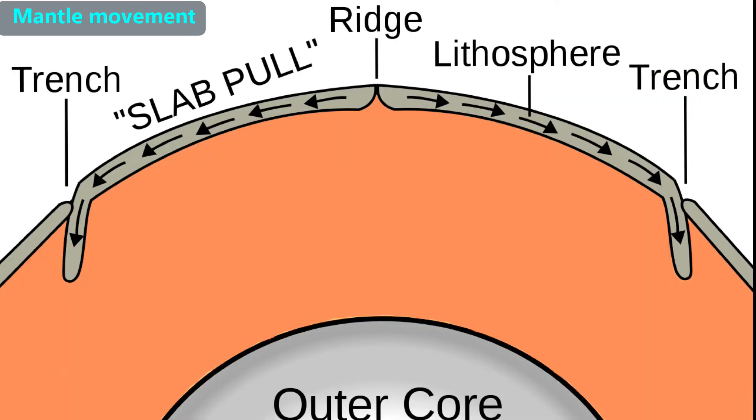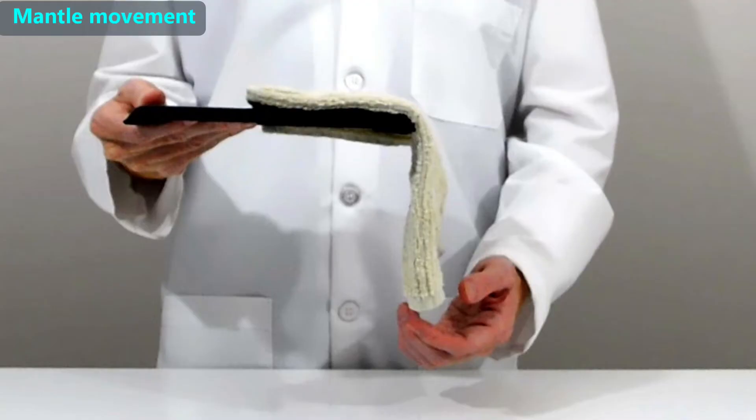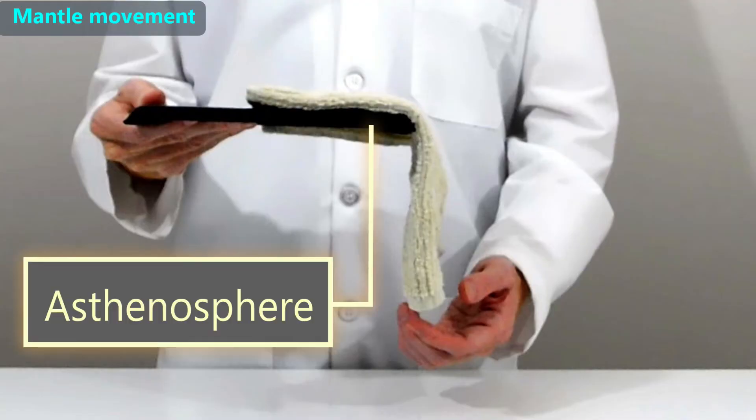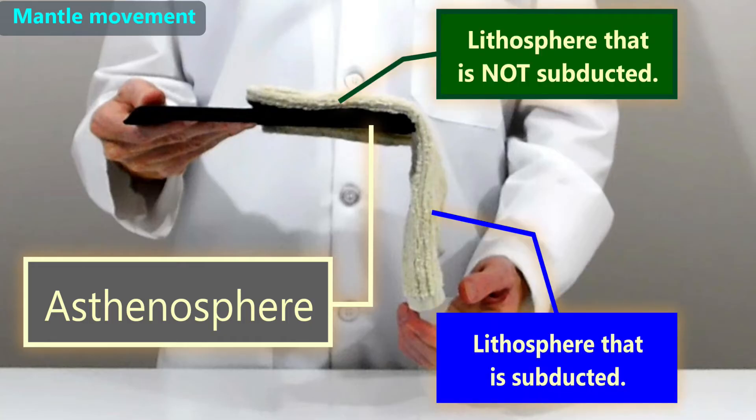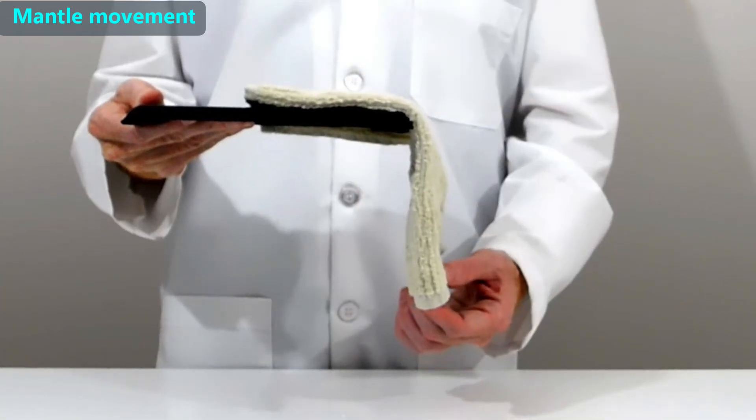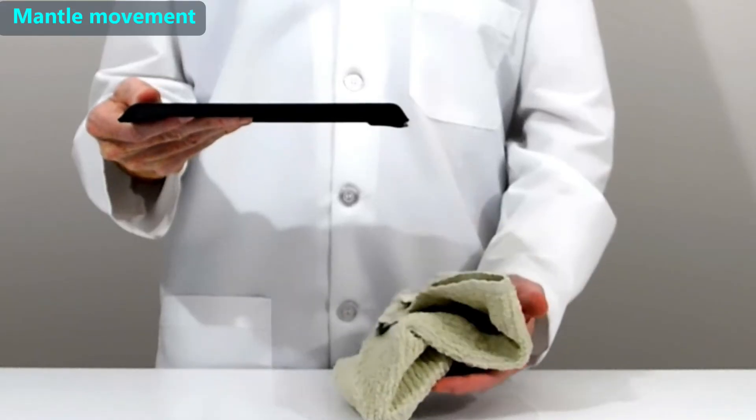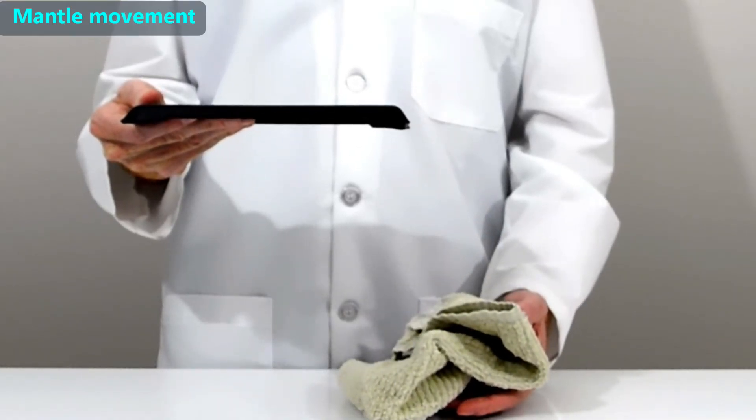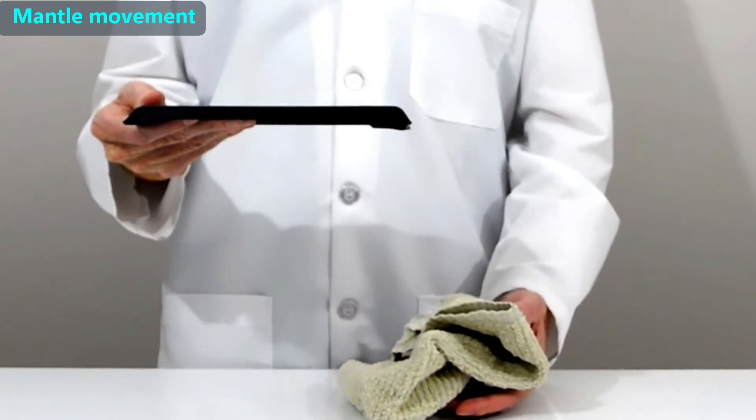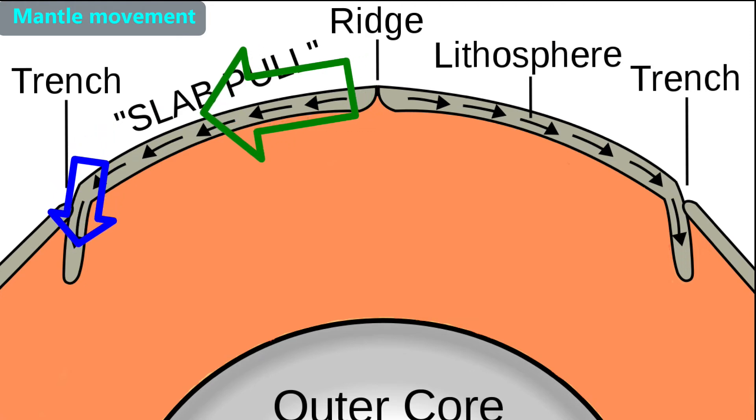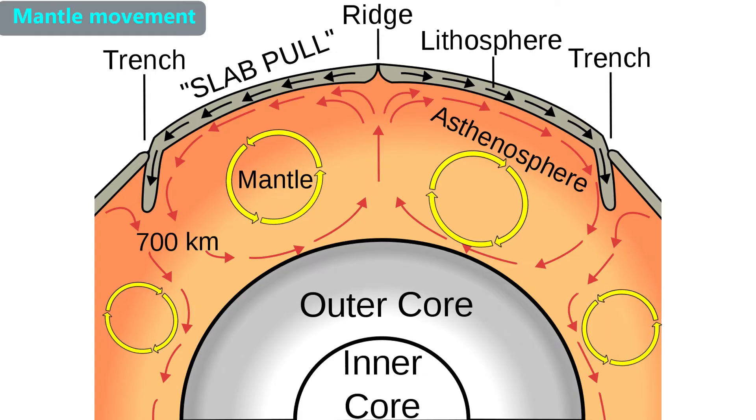Another explanation for plate movement is described as the slab-pull theory. To illustrate, we can pretend that the metal is the asthenosphere, and the cloth is like the lithosphere with the vertical part representing a subducted portion. In this theory, we refer to the lithosphere as a slab. As the vertical part descends into the mantle, its weight pulls on the horizontal part of the lithosphere, much like the weight of the vertical section of cloth will pull on the horizontal portion.